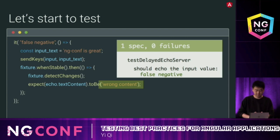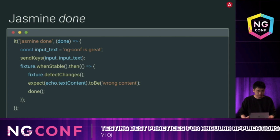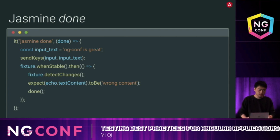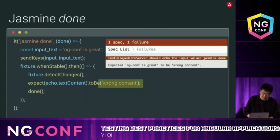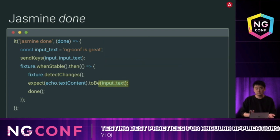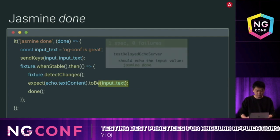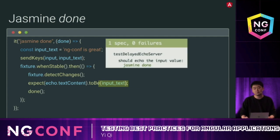So how do we handle this? The first thing we can do is use Jasmine's done callback. Jasmine provides a way to tell it when the test is completed — we pass done to our test function and call done when the test is finished. Running the tests again, the test starts to fail — great. We change it to the right expectation, and the test works.